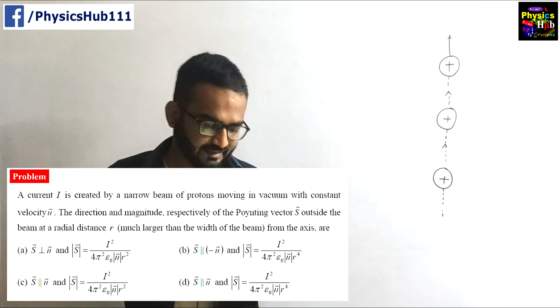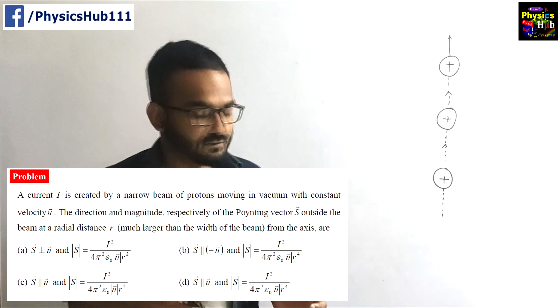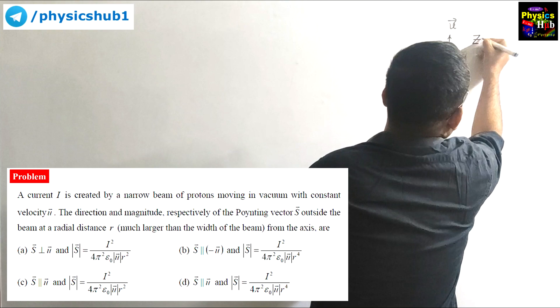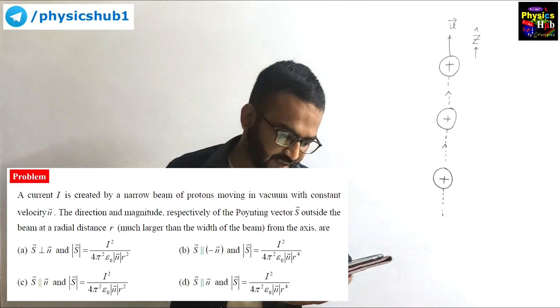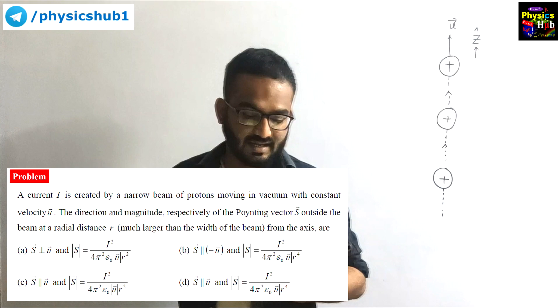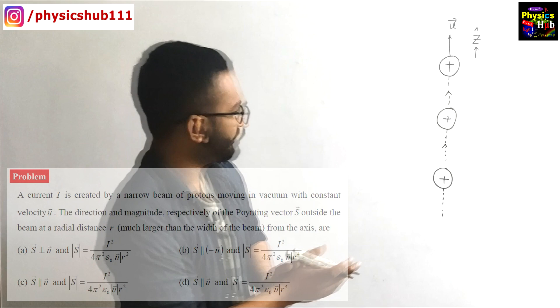The problem reads like this: A current I is created by a narrow beam of protons moving in vacuum with constant velocity u. This is constant velocity u in the k cap direction. The magnitude and direction respectively of the Poynting vector is outside the beam at radial distance r, much larger than the width of the beam from the axis. So you have to find out the Poynting vector at a distance r.